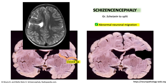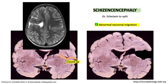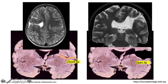Now, if we have the margins which are wide apart and there is CSF in the cleft, the cleft is now communicating with the ventricle. And this is what we call open-lipped schizencephaly. And here is what it looks like on MRI.